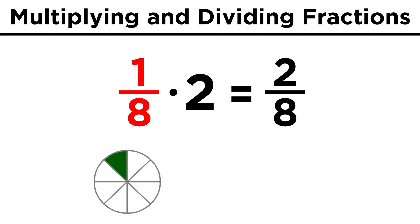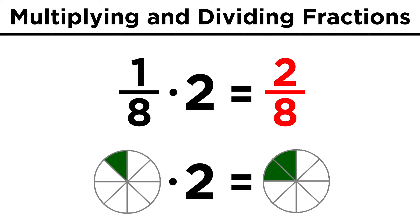If we have a slice of pizza which is one eighth, when we multiply that by two, meaning we have two slices of pizza, we have two eighths, not two fourths. Two eighths represents two slices, or one fourth of the pizza.